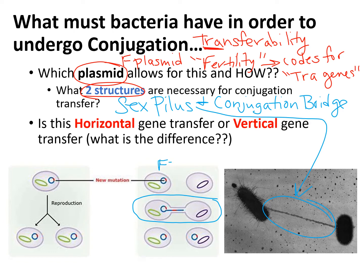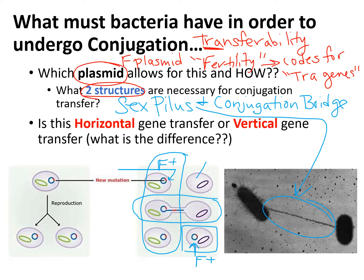The bacteria that have the plasmid — shown as a ring with a red piece in it — are called F plus. At the very end of the process, that cell is also F plus. Whenever you see that little plasmid, it's F plus. The ones that do not have the plasmid are called F minus, which you'll see in a later slide.